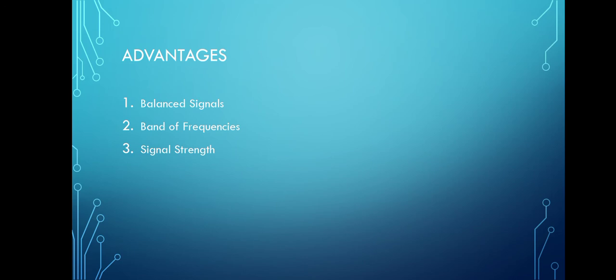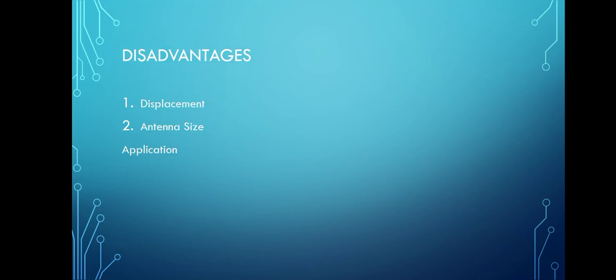Advantages of the half-wave folded dipole antenna: first, balanced signal — the reception of the folded antenna is achieved with a balanced signal. Second, band of receivers — it can receive a particular signal from a band of frequencies without losing quality. Third, signal strength — a folded dipole maximizes signal strength through the two conductors, wire or rod.